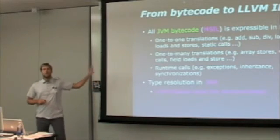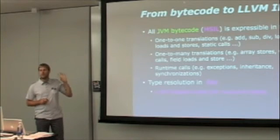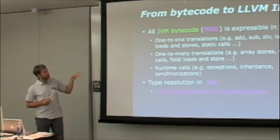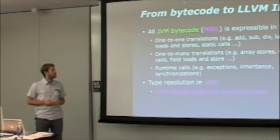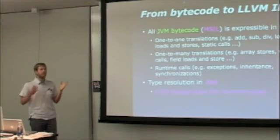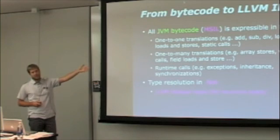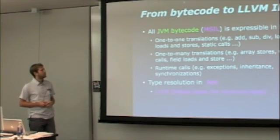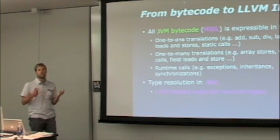All JVM bytecode and all MSIL instructions are expressible in LLVM. There are three cases. The first one is one-to-one translations: addition, subtractions, arithmetic operations, or variables, load and stores — that's a one-to-one translation, so for one bytecode there's one LLVM instruction. One-to-many translations: array stores in Java are like three or four instructions in LLVM IR. Virtual calls: you get the virtual table of an object and you do the virtual call.